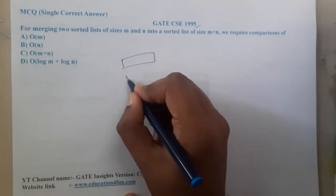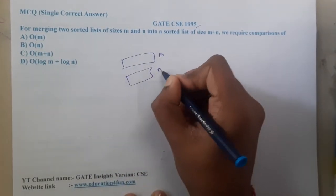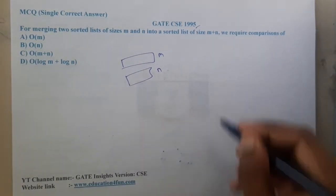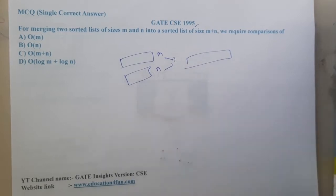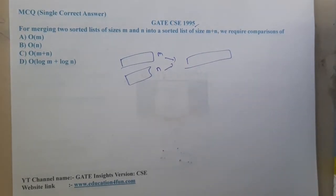into a sorted array or list, we have two sorted lists of sizes m and n. We want to merge these two into one sorted list. The question asks: how many comparisons do we require?